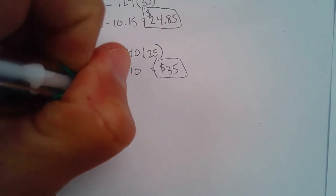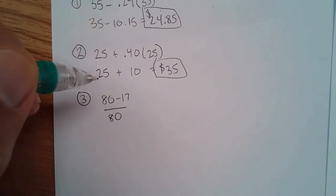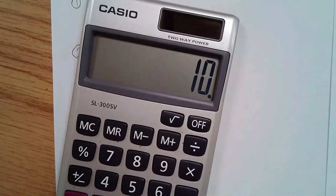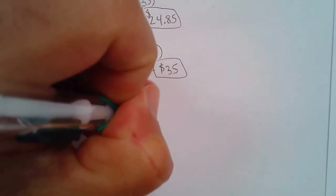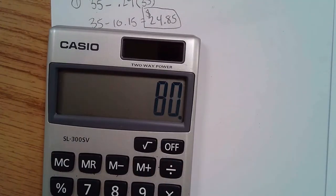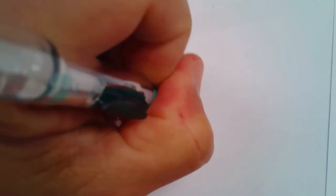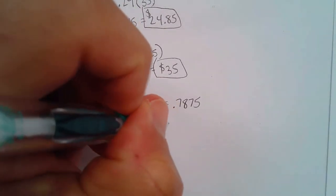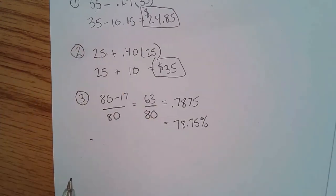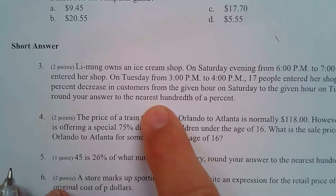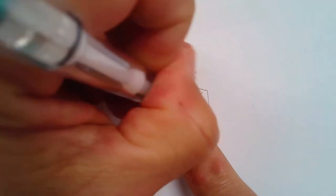So 80 minus 17, divided by that first number which was 80. 80 minus 17 is 63. So 63 divided by 80 equals 0.7875. Moving the decimal two places to the right, that's 78.75%. The question asks for the nearest hundredth of a percent — this is already to the hundredth place, so no rounding needed.